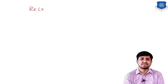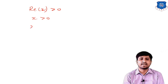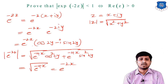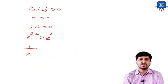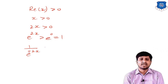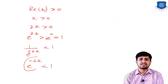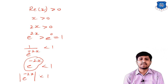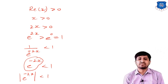Starting from Re(z) > 0, i.e., x > 0: multiply by 2 to get 2x > 0, so e^(2x) > e^0 = 1. Taking inverses (inequality flips): 1/e^(2x) < 1, i.e., e^(-2x) < 1. Since |e^(-2z)| = e^(-2x), we have |e^(-2z)| < 1. The converse follows similarly — so the result is proved.